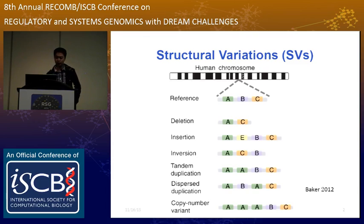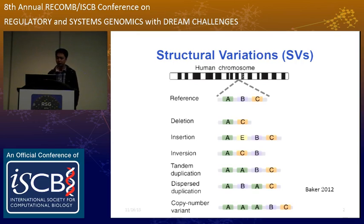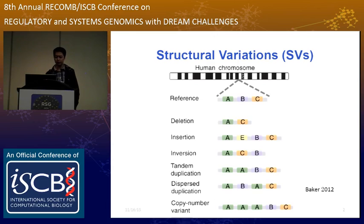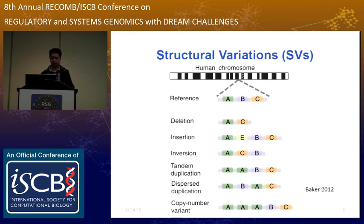I like Dr. James Lupski's analogy. Imagine our genomes as a type of encyclopedia — the book of life. Single nucleotide variants can be represented as typographic errors in letters of the alphabet, while structural variations can be represented as deletions or modifications of entire sentences, paragraphs, or pages, or even large parts of an entire volume. So they are very important.